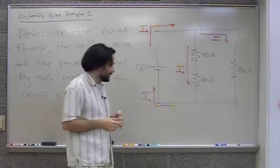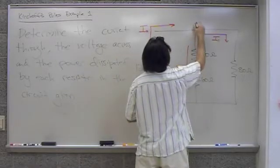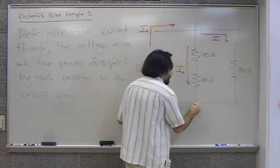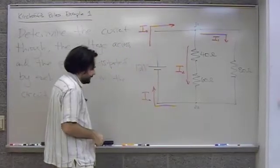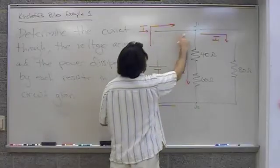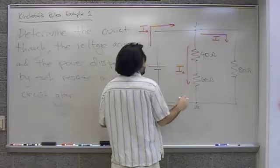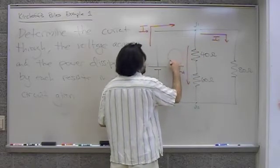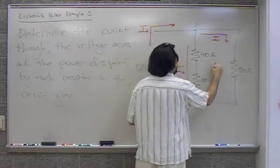Once I have my currents labeled, I make sure to label my junction here. I label that J1. I could label this junction J2. I'll label it, but we'll see if we actually need it. Next we label the loops. I'll label the loop incorporating the 12 volt voltage source, as well as the 40 and 60 ohm resistors. I'm going to label that loop A. And I'll label this one loop B.